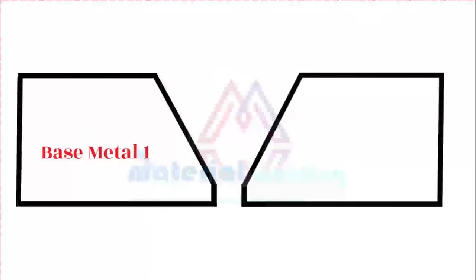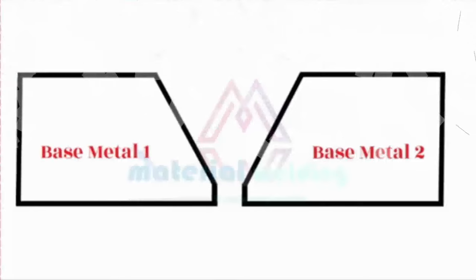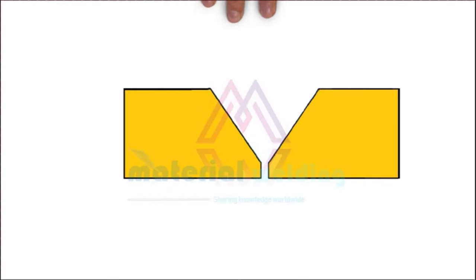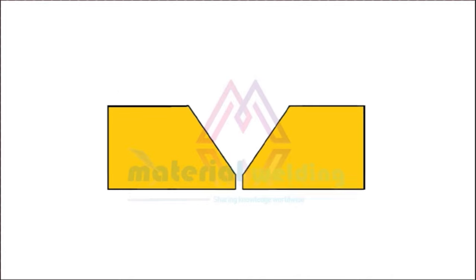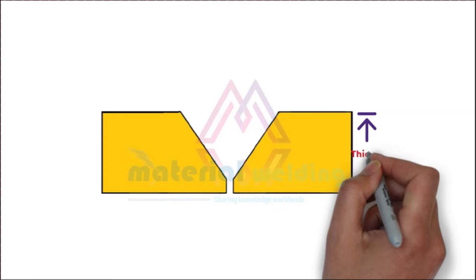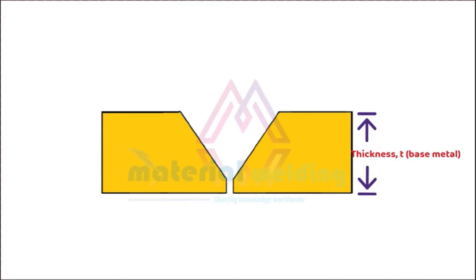For a groove weld joint, you need plate members. Here they are shown as base metal 1 and base metal 2. The thickness of the plate is usually given as T, which means base metal thickness.